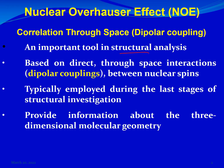These protons may be more than three, four, or five bonds away from each other, but if they are close together in space, you will see correlations between those protons, and from that you can find the relative orientation of these protons inside the molecule. This technique is employed in the very last stages of structural investigation, because once you have the skeleton, the last thing to determine is the three-dimensional molecular geometry, or stereochemistry. Let's see with an example how we can read a 2D NOESY spectrum.